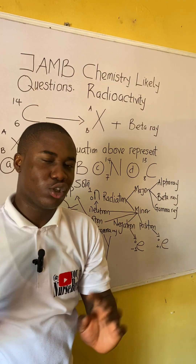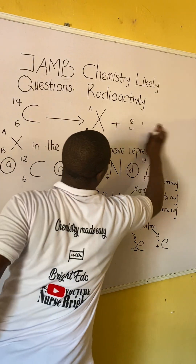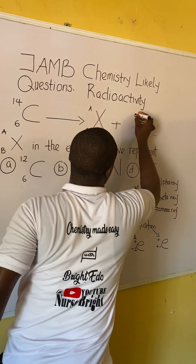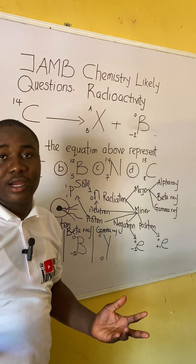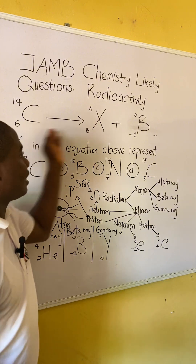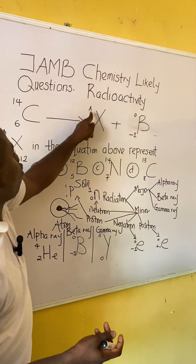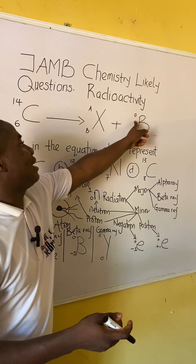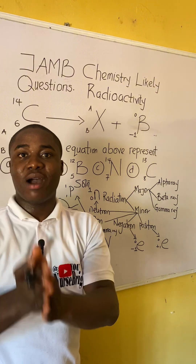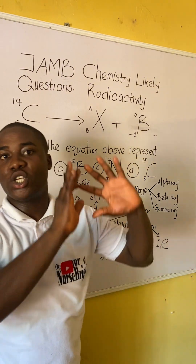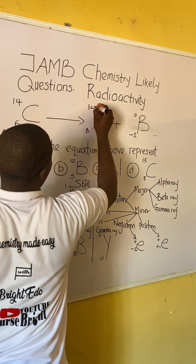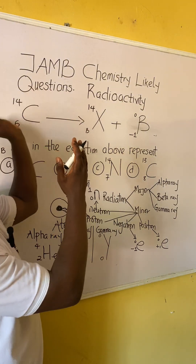To solve, we replace the beta ray with its symbol: e with 0 on top and minus 1 on the bottom. To balance nuclear reactions, you must ensure that the top values are balanced and the bottom values are balanced — balancing left and right separately. Here at the top, carbon-14 has 14. So the unknown element must also have 14 on top, because 14 plus 0 equals 14.